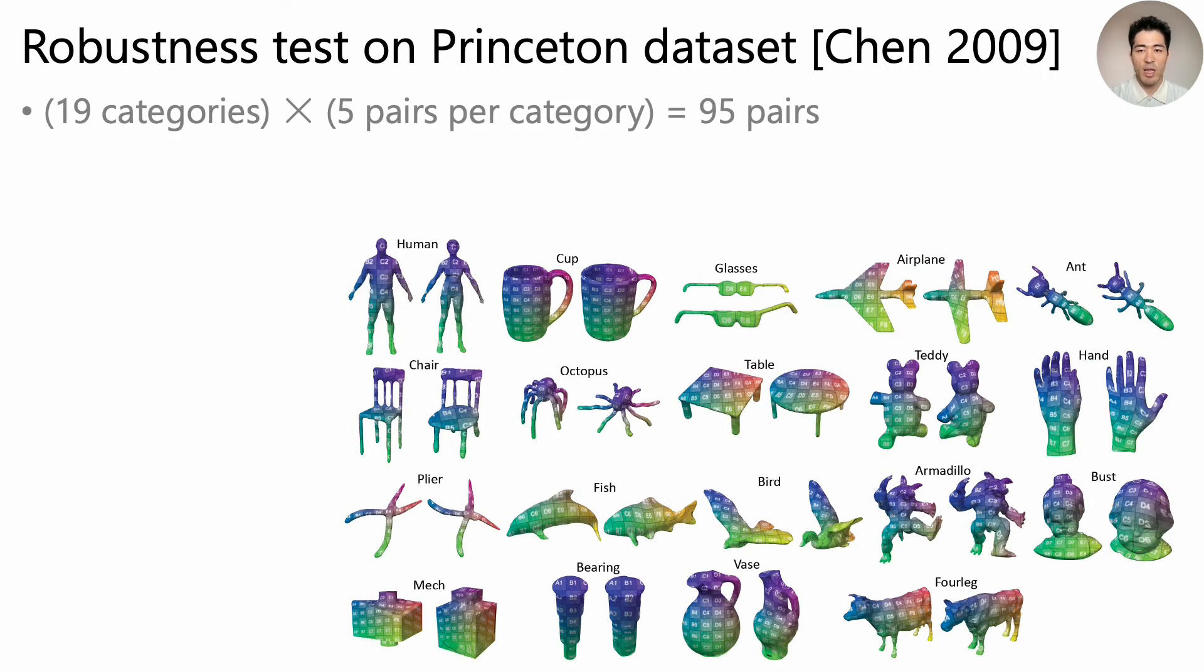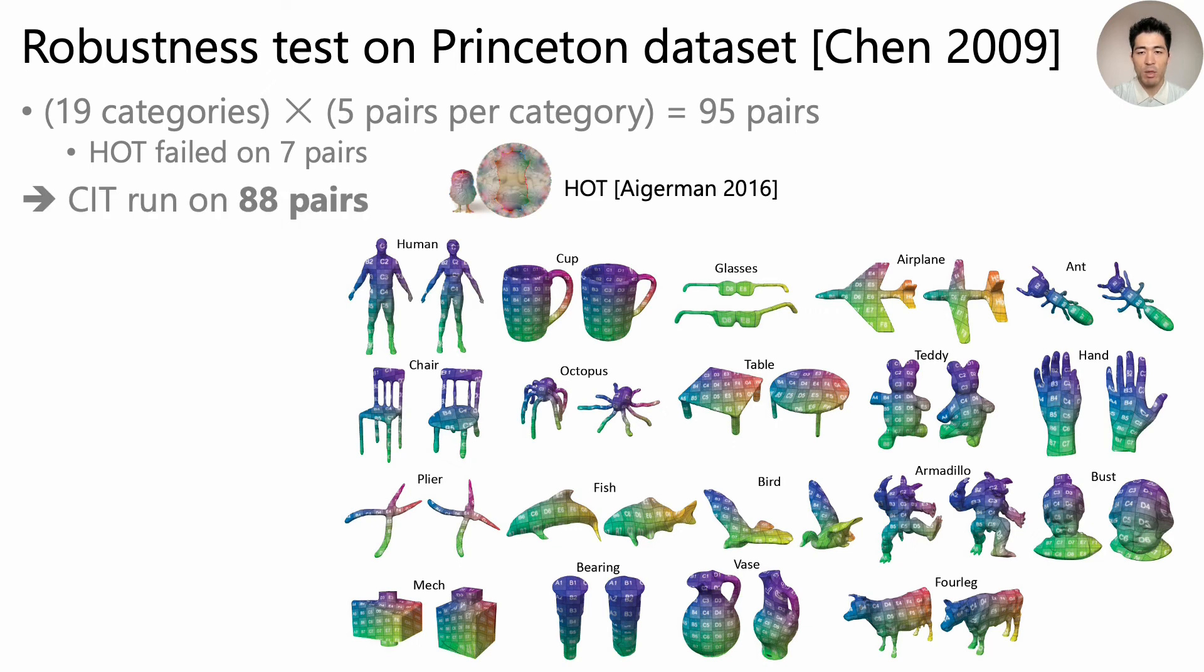To assess the practicality of our method, we did a robustness test on the Princeton dataset. It consists of 19 categories and we randomly picked 5 pairs per category, totaling in 95 pairs to test. Out of these, HOT, the method we used to generate the input vertex images, failed on 7 cases no matter how we chose the landmarks. So we tested our method against the remaining 88 pairs.